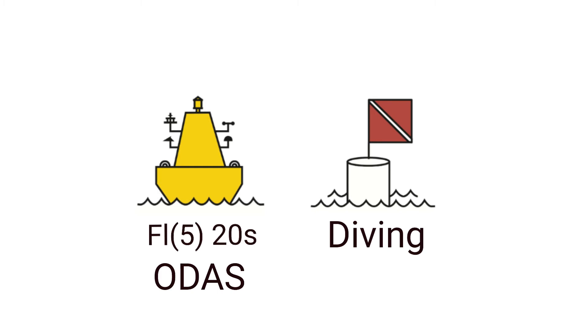Then there is an ODAS boy, which stands for Ocean Data Acquisition System. It's a scientific buoy. Its purpose is to collect ocean data, like wave heights, for example. If it has a light, it will be yellow. The last one here is a diving flag, which indicates divers in the area. There's also an alpha flag carried by vessels that are carrying out diving operations.